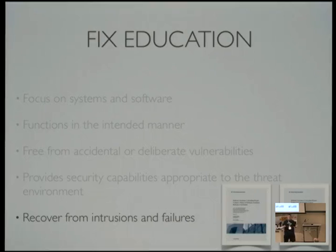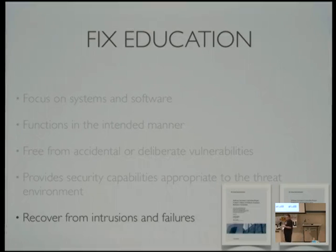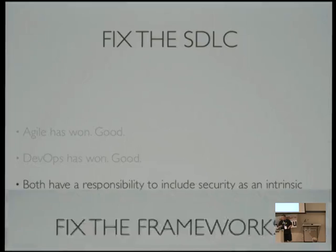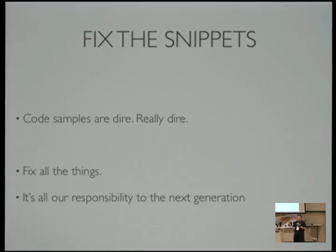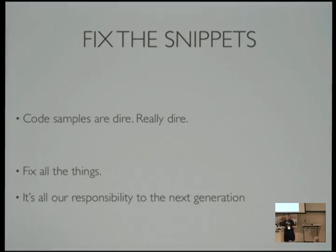These are the five things. Focus on systems and software — that's why I love DevOps. You are now focused on deploying a cloud of machines that represents your entire block in no time. It functions in the intended manner, it is free from accidental or deliberate vulnerabilities, it provides security capabilities. Code snippets — I've basically been pulling my hair out reading Ruby on Rails security guides, and it's terrible. It's awful — it's like what you should not do. It's better than no advice, but please help me fix the snippets. The snippets should not be insecure. If you're going to display something on the screen that takes user input, please do the basics: input validation. It was CS101, lecture one.